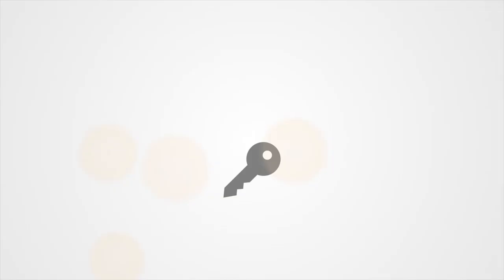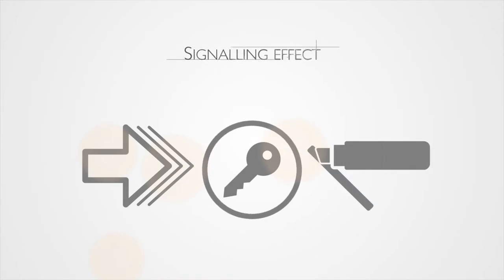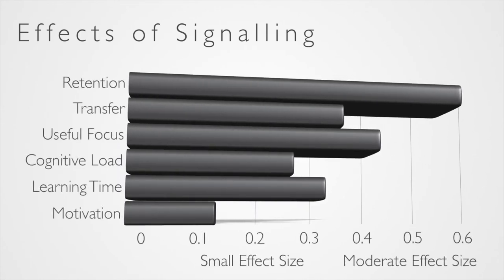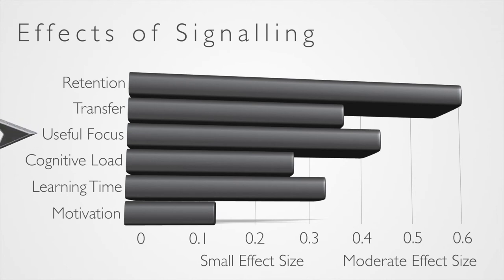If the visual you're using is complex, then you might use arrows, circles, or highlighting to show what the most important parts of the figures are. This is called the signalling effect and it's been shown to make it much easier for students to learn. In a recent meta-analysis of over 100 studies and 10,000 participants, signalling was shown to have big effects on lots of outcomes. As you can see from this graph, it helps students learn new content but also transfer that content to other skills. This may be because students spend more time focusing attention on areas of interest, taking in less unnecessary information and better managing their cognitive load — meaning they learn material in less time and are more motivated. Not bad for a few arrows, if you get my point.